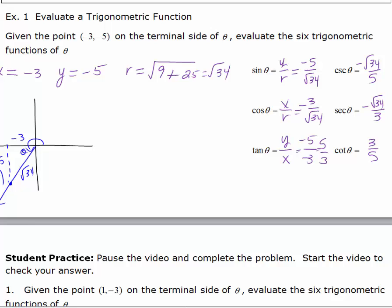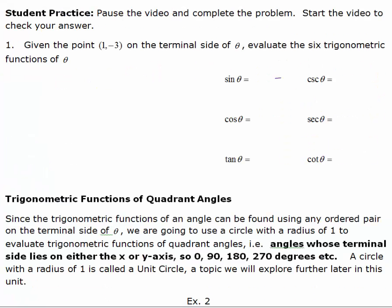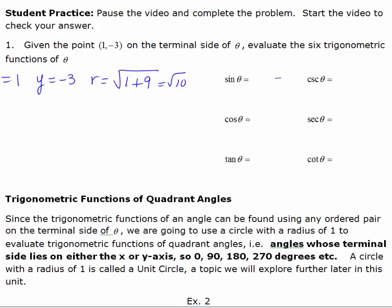Pause the video and do the practice problem, then turn the video back on to check your work. Given the point 1, negative 3 on the terminal side of theta, evaluate the six trigonometric functions of theta. x equals 1, y equals negative 3, and r equals the square root of x squared plus y squared. 1 squared is 1, plus 9, so r equals the square root of 10. Sine is y over r, which is negative 3 over the square root of 10. Cosine is x over r, which is 1 over the square root of 10. Tangent is y over x, which is negative 3 over 1, or negative 3.